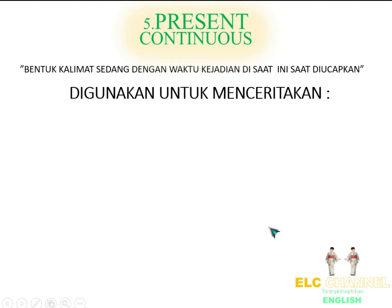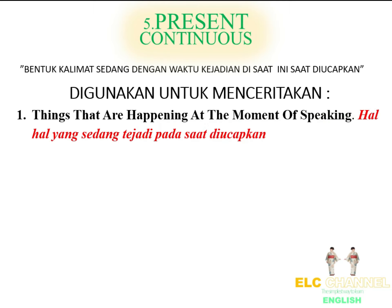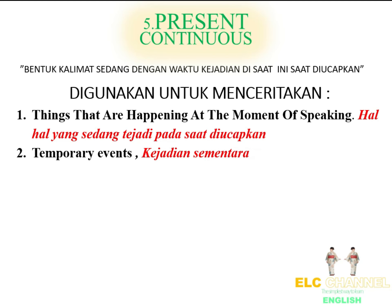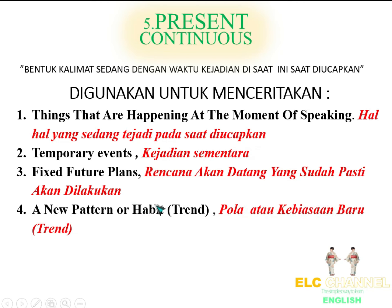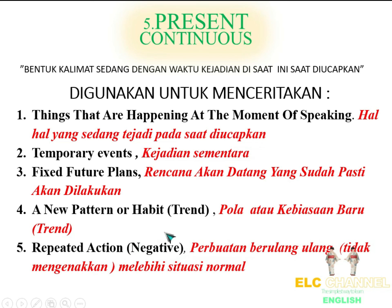Present Continuous, atau bentuk kalimat sedang dengan waktu kejadian di saat ini, saat diucapkan. Ini digunakan untuk menceritakan: nomor 1, hal-hal yang sedang terjadi pada saat diucapkan. Nomor 2, kejadian sementara. Nomor 3, rencana akan datang yang sudah pasti akan dilakukan. Yang keempat, adanya pola atau kebiasaan baru, atau yang terkenal disebut dengan trend. Yang kelima, perbuatan yang berulang-ulang, tidak mengenakan, melebihi situasi normal.